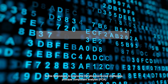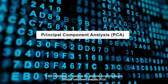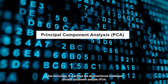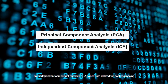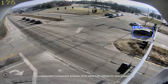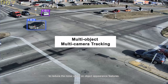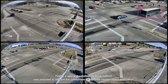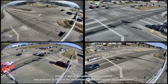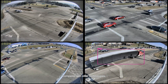In this technology, to overcome the aforementioned challenges, Principal Component Analysis and Independent Component Analysis were both utilized for post-processing to reduce the noise effect on object appearance features. Finally, a gain and suppression score method was proposed to improve the correctness of the cross-camera object association.